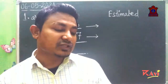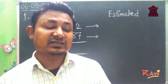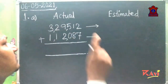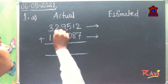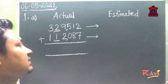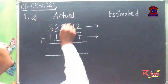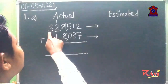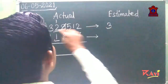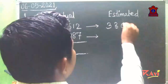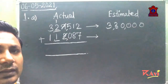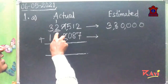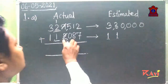Now let's start Exercise 2.5. Question number one: find the actual and estimated sum by rounding off to the nearest ten thousand. Check what is at the ten thousands place — there is 2, and here there is 1. Before that, we have 9, which is more than five, so one will be added. The other has less than five so nothing is added. The rounded values give us 3,30,000 — so 3,29,500 rounds to 3,30,000. The other rounds to 1,10,000.